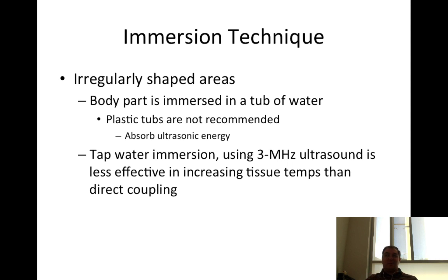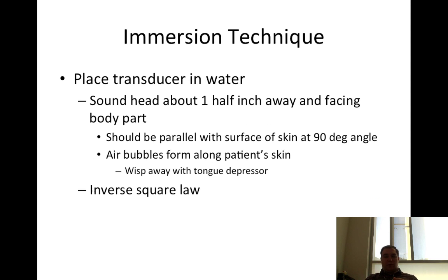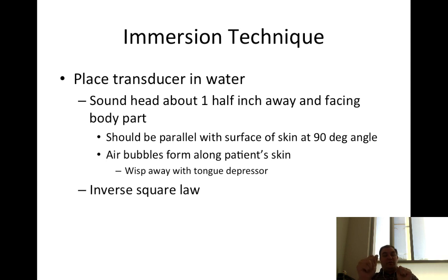With the immersion technique, the body part is placed in a tub of water. Plastic tubs are not recommended because they absorb ultrasonic energy. Using 3 MHz ultrasound in tap water immersion is less effective at increasing tissue temps than direct coupling, but it works for irregularly shaped areas. Place the ultrasound head in the water with about a half-inch gap from the body part, parallel to the skin at a 90-degree angle. That 90-degree angle relates to the inverse square law.